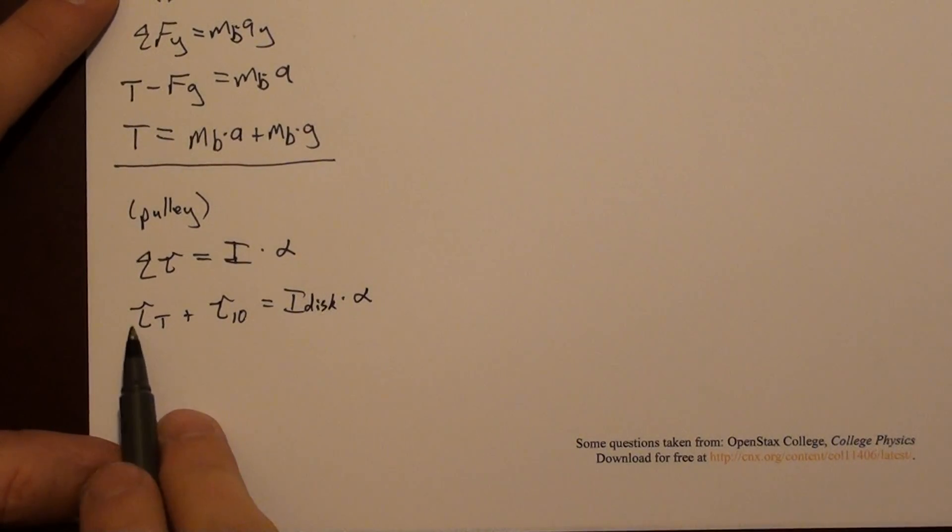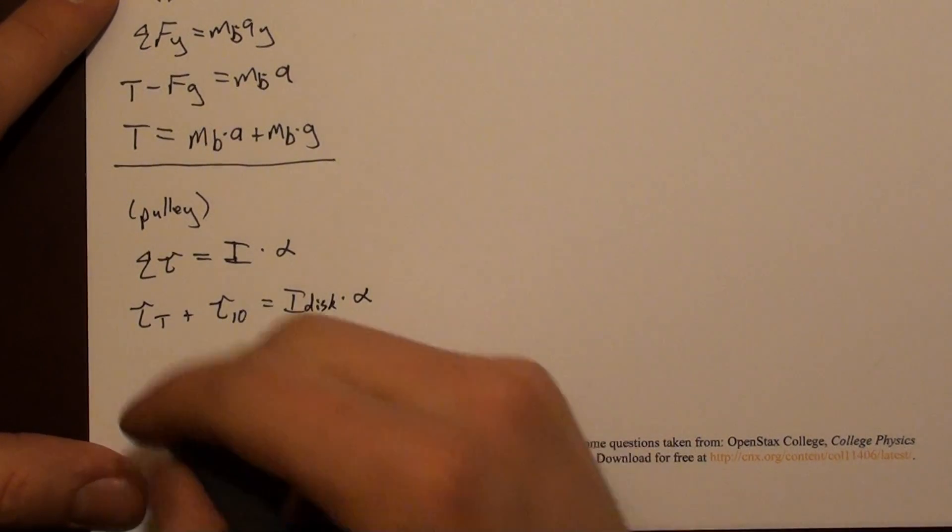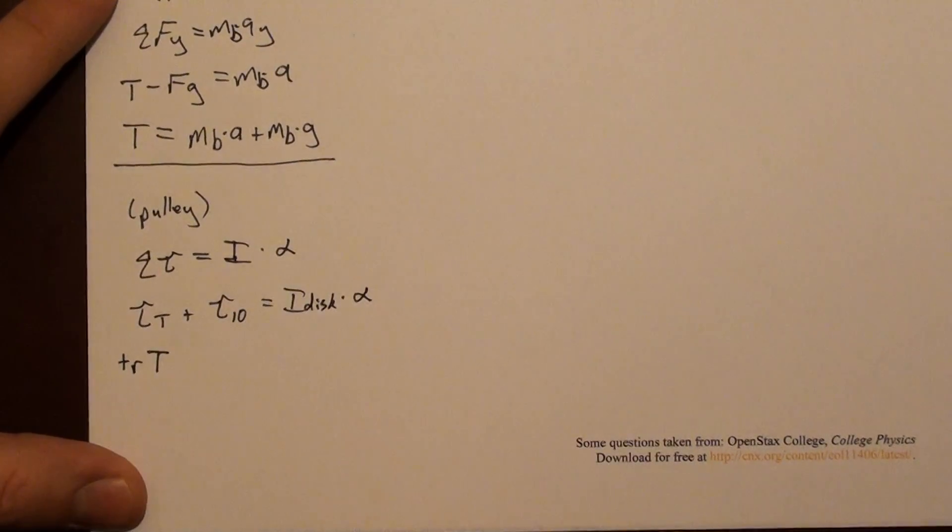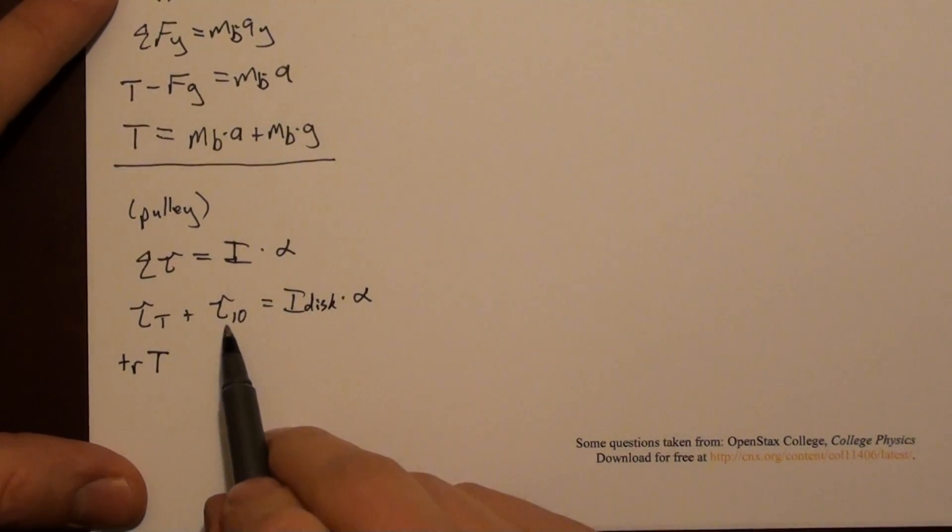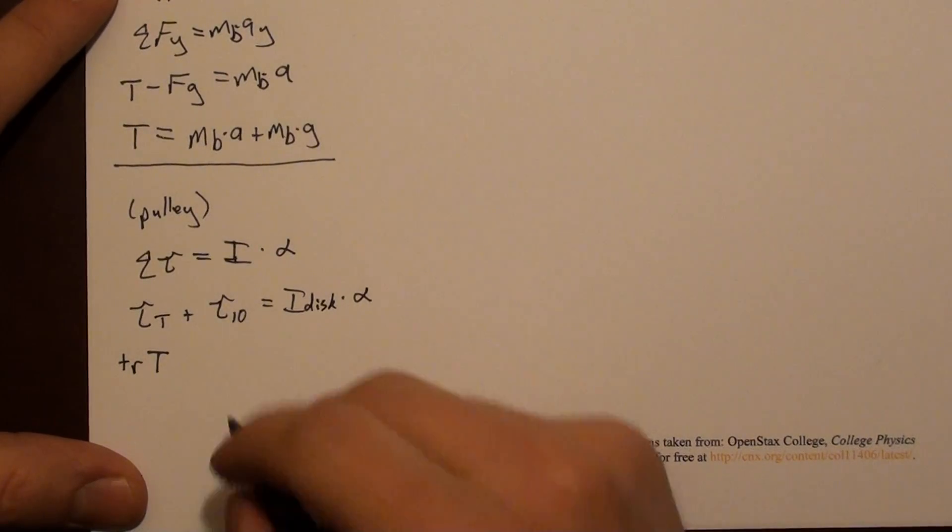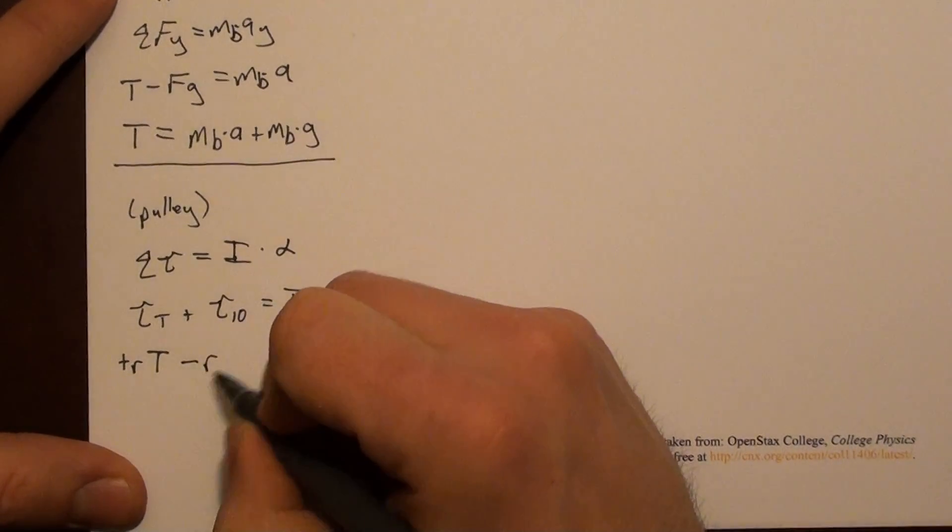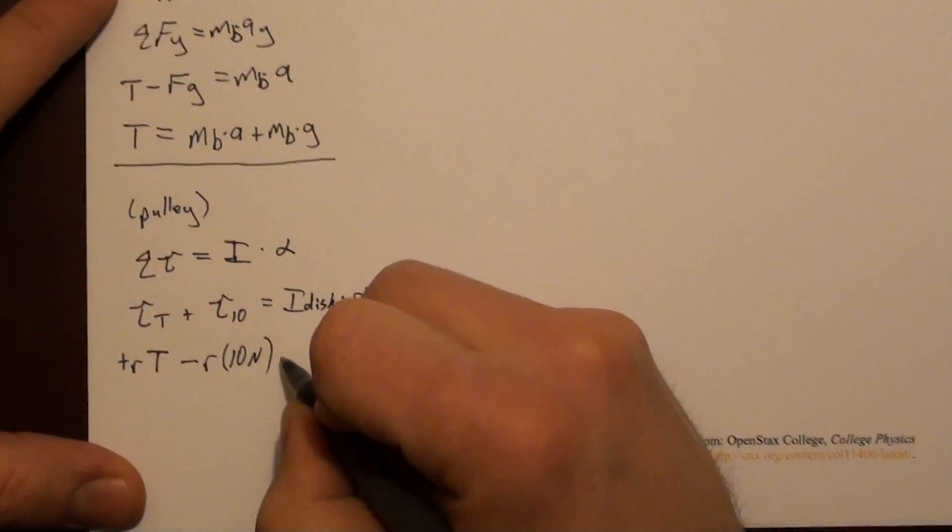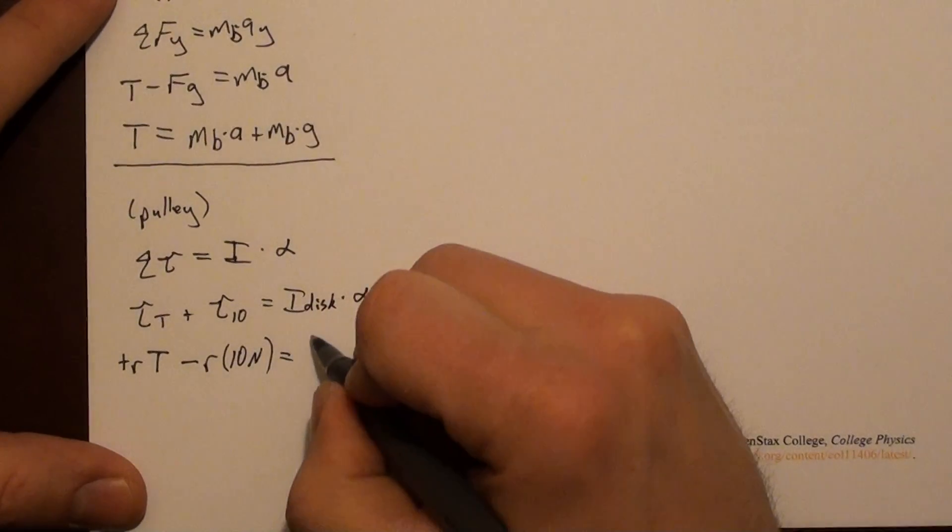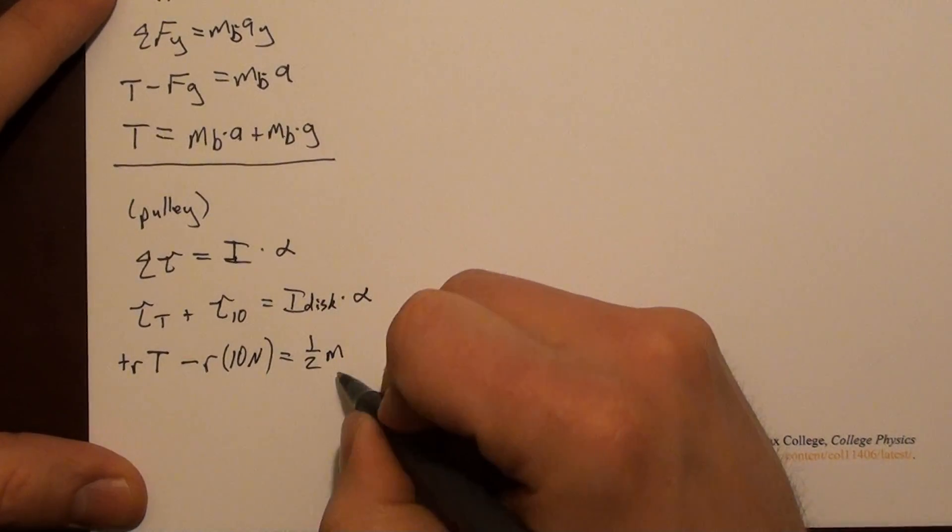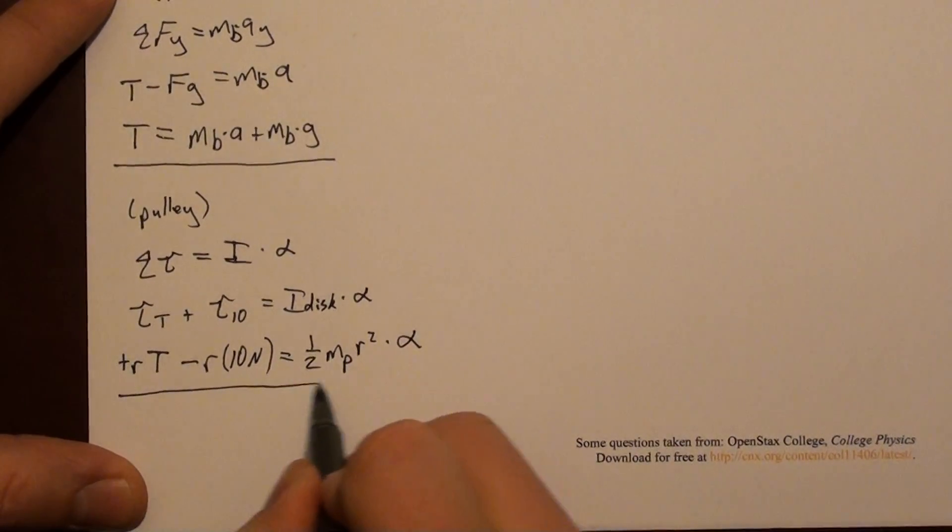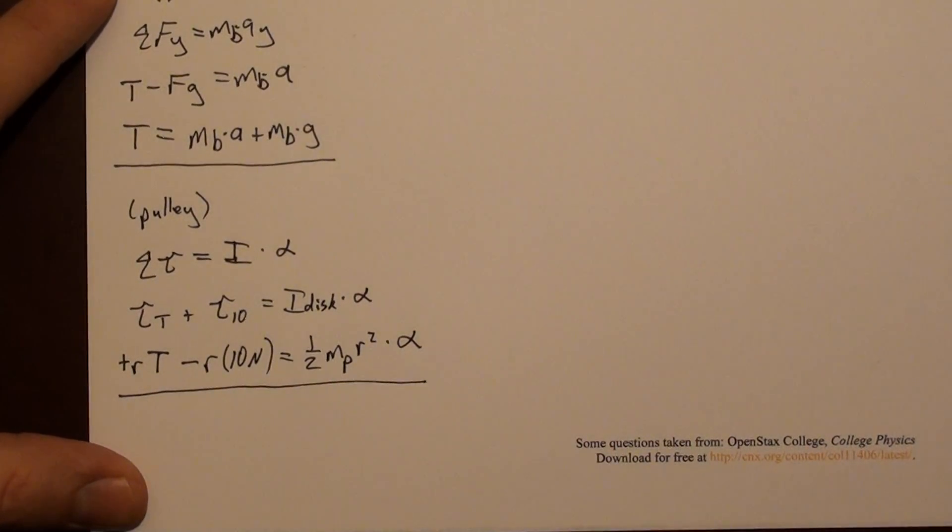a torque due to tension plus a torque due to the 10 newton force equals I disk times alpha. So the torque due to tension is, in our positive sense, it's counterclockwise. So that's going to be positive R times T. The torque due to the 10 newton force is clockwise, so that's what we've called negative. So that's minus R times 10 newtons. And the moment of inertia of this disk is half MP R squared times alpha. So here's another equation.